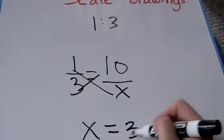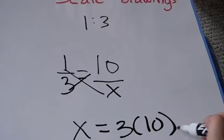Now in this proportion, we cross multiply. x times 1 is equal to x. Now the other side is 3 times 10.